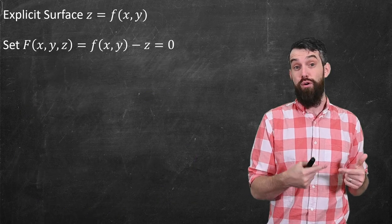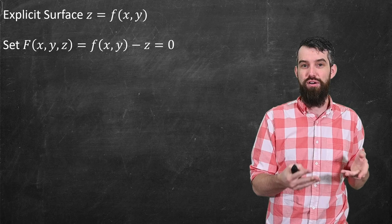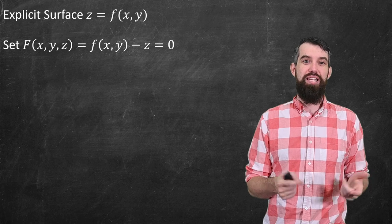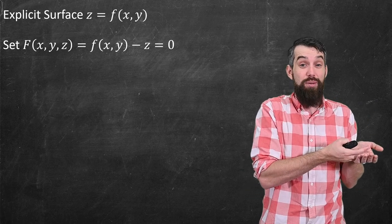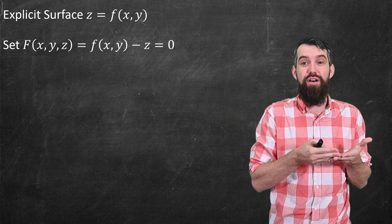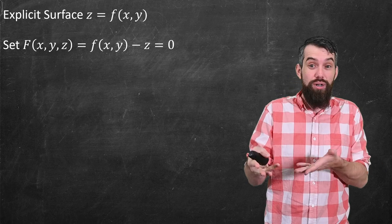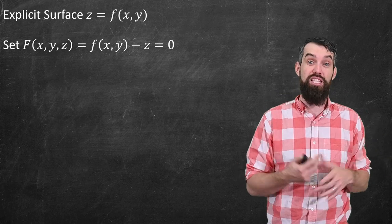So that was our formula for implicit surfaces, but now I want to do a formula for explicit surfaces z is a function of x and y. And really what we're going to do is just say every explicit surface can be thought of as an implicit surface. So for example I can come up with a capital F of x, y, and z, which is just f of x, y minus z equal to zero. So the level surface to capital F is just the same thing as this explicit surface.